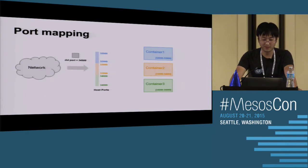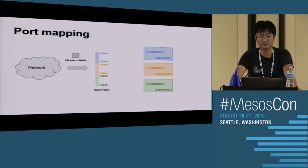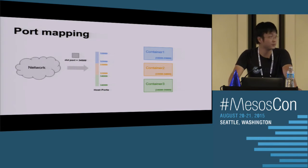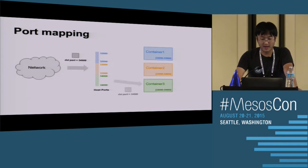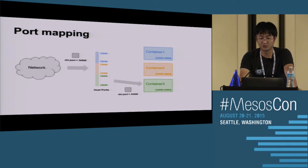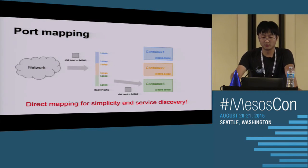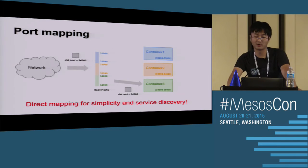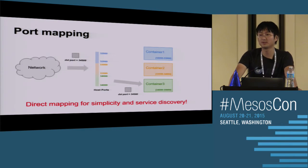The approach is based on port mapping. Say you have an incoming package with a destination port of 33,500. Each container gets assigned a subset of the host port range - for example, container one gets assigned 32,000 to 33,000. Based on the mapping, we redirect that package to the correct container. It's a direct mapping, so the port on the host is the same port inside the container. This makes it transparent to service discovery.